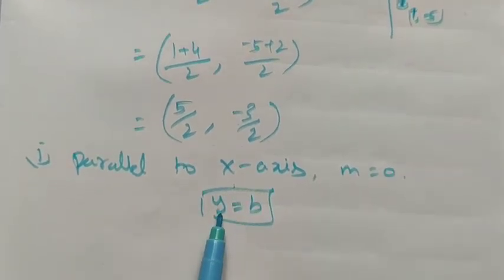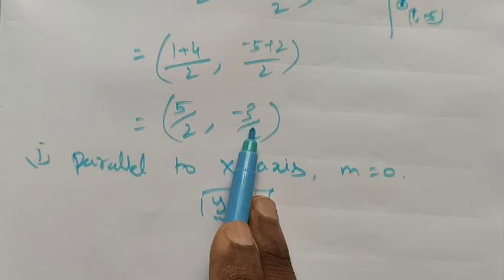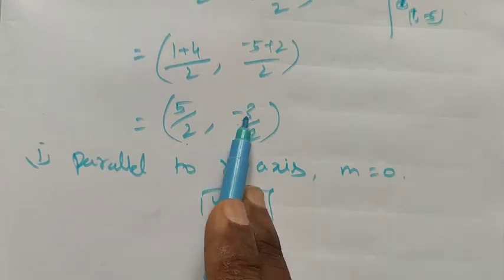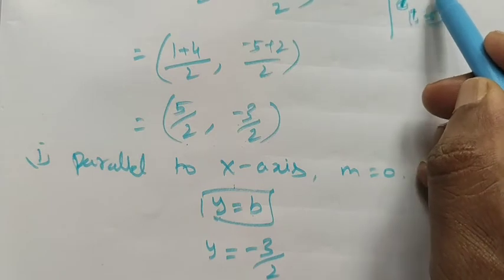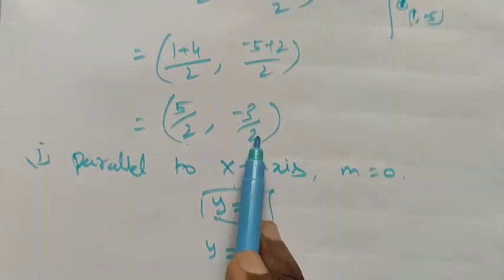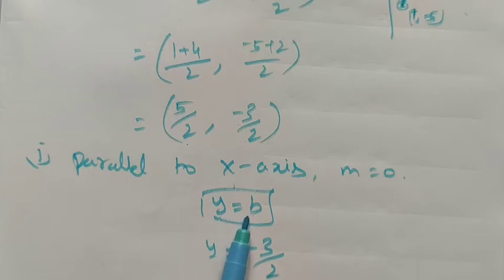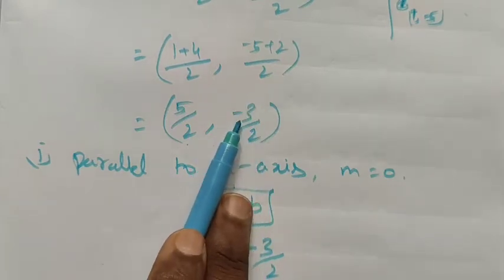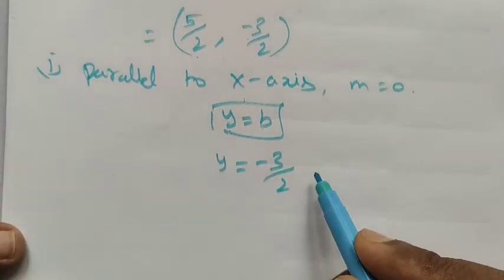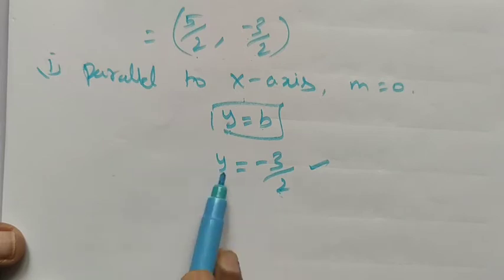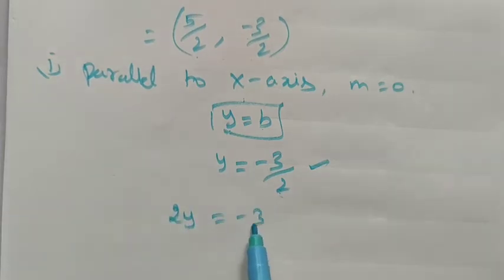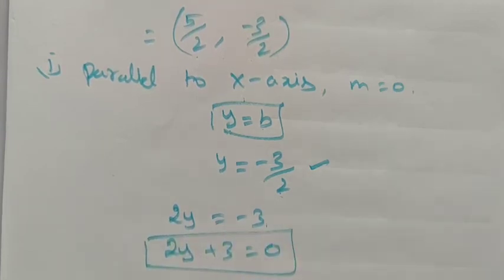In the formula y = b, the value of b is the y-coordinate of the midpoint, which is -3/2. So y = -3/2. Multiplying both sides by 2: 2y = -3, and rearranging: 2y + 3 = 0. This is the equation of the line parallel to the x-axis.